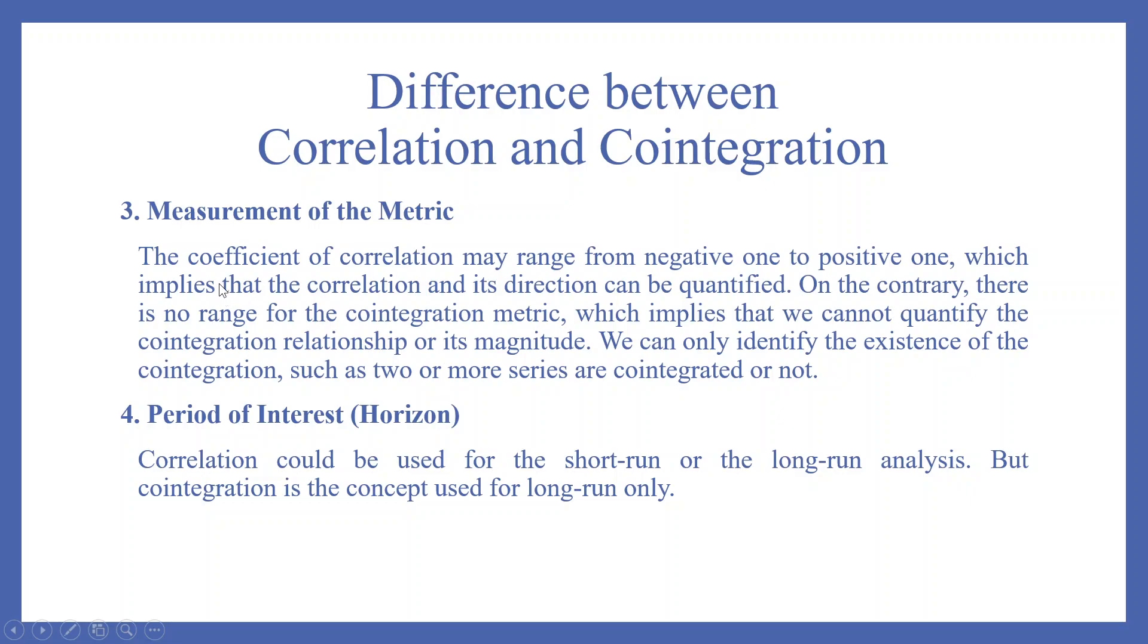Measurement of the matrix. The coefficient of correlation may range from negative one to the positive one, which implies that the correlation and its direction can be quantified. On the contrary, there is no range for the cointegration metric, which implies that we cannot quantify the cointegration relationship or its magnitude. We can only identify the existence of the cointegration such as two or more series are cointegrated or not.